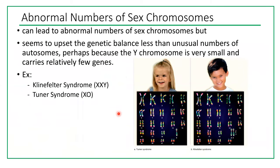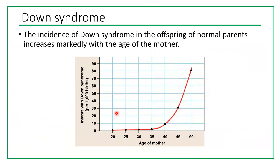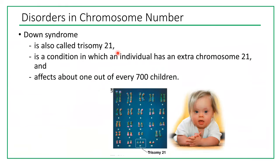We also have other trisomies, such as trisomy 18 and trisomy 13. Down syndrome is the most common trisomy that results in a live birth. Many other trisomies cause miscarriage and the baby is never born. Abnormal number of sex chromosomes seems to upset the genetic balance less than an unusual number of autosomes, perhaps because the Y chromosome is very small and carries relatively few genes.